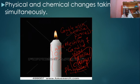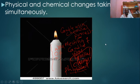As an assignment, in tabular form, give me four differences between a physical change and a chemical change. Thank you, and don't forget to subscribe to our channel.